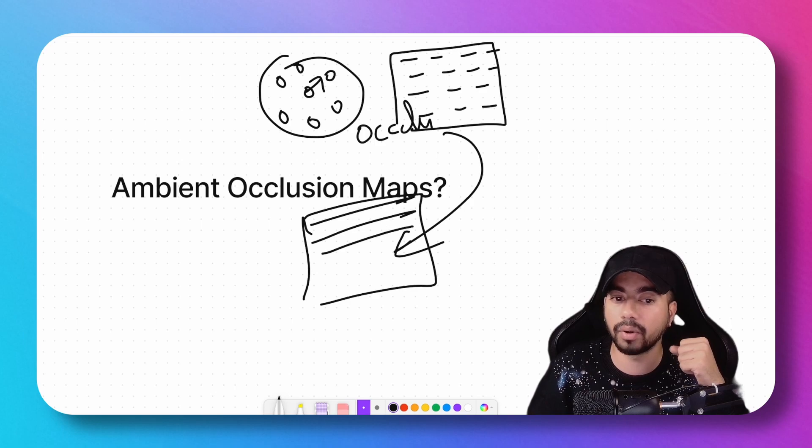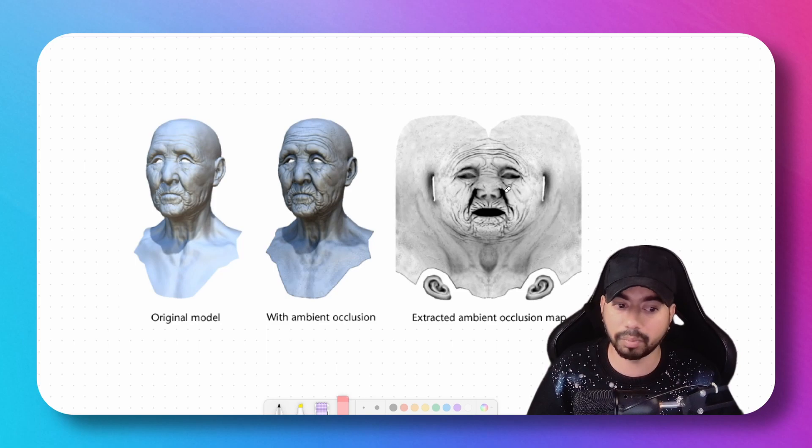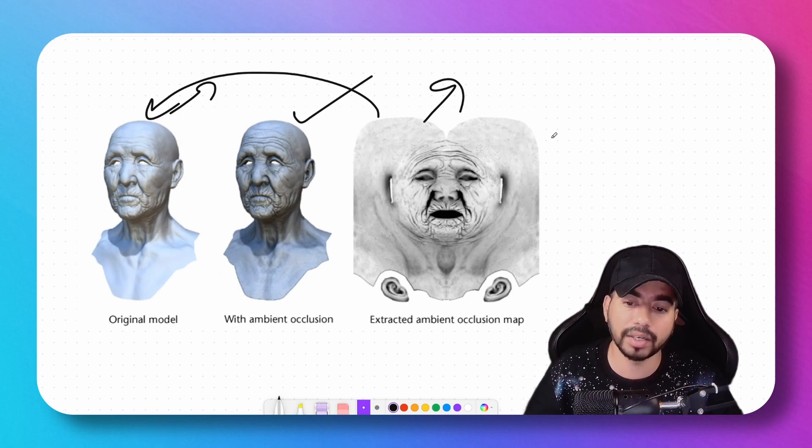...of an ambient occlusion map. This first image is the original model, this is the ambient occlusion map, and when you apply this ambient occlusion map on this model, this is how your mesh looks. There are various ways to extract an ambient occlusion map from a model. I'm not going to...